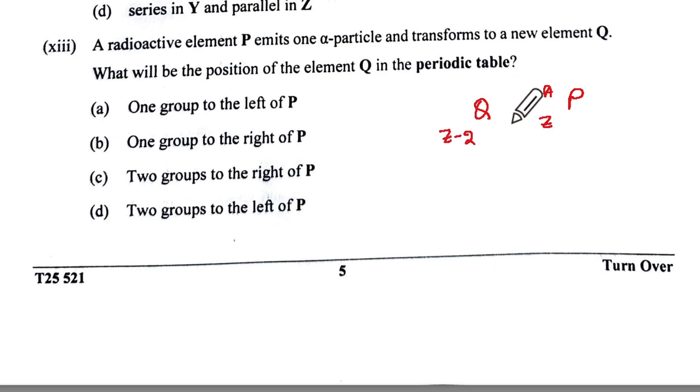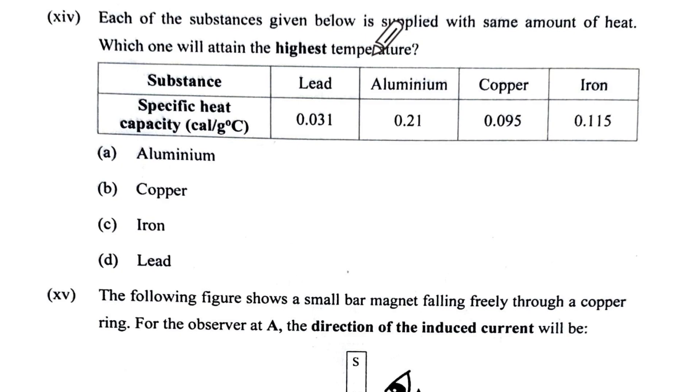Each of the substances given below is supplied with same amount of heat. Which one will attain the highest temperature? Highest temperature is the one which will have the lowest specific heat capacity because less heat will show sharp rise in temperature. Between the options, this is the least, so the correct option is D.